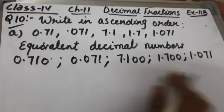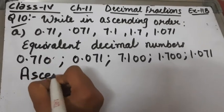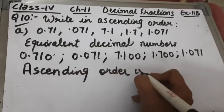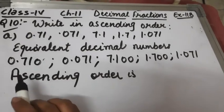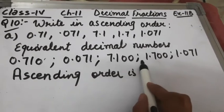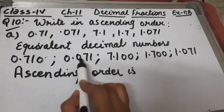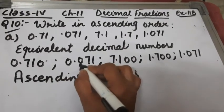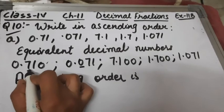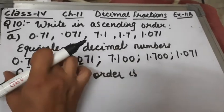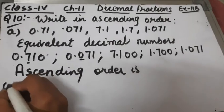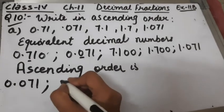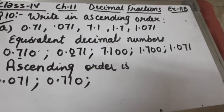Now arrangement in ascending order — smallest number first. We check the ones place. The smallest ones place is 0. Both 0.071 and 0.710 have 0 in the ones place, so we compare the tenths place. In 0.071 the tenths place is 0, and in 0.710 the tenths place is 7, so 0.071 is smaller. So at the first position 0.071 comes, and after that 0.710.